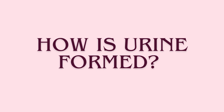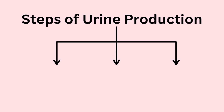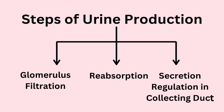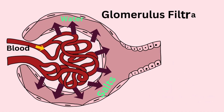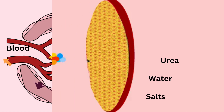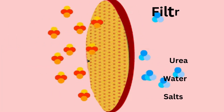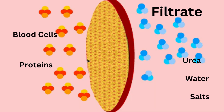Urine is produced in three steps. Step 1: Filtration. Blood pressure pushes water, salts, urea, and other wastes through the glomerulus into Bowman's capsule, like squeezing juice from a fruit. This creates a filtrate, while blood cells and proteins stay behind.